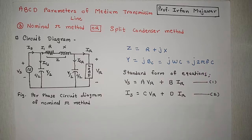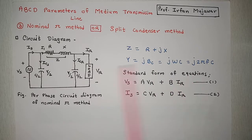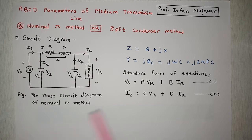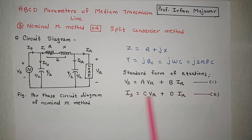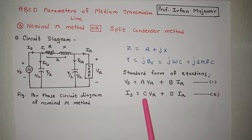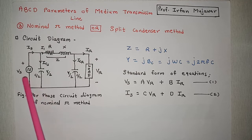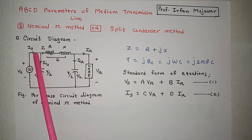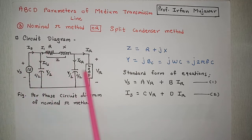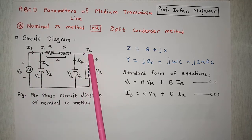Now we need to derive the ABCD parameters of the transmission line. We know the standard form of equations expressing Vs and Is in terms of Vr and Ir using ABCD parameters. These are given in equations 1 and 2: Vs = A·Vr + B·Ir, and Is = C·Vr + D·Ir. We have to express Vs and Is in terms of Vr and Ir.